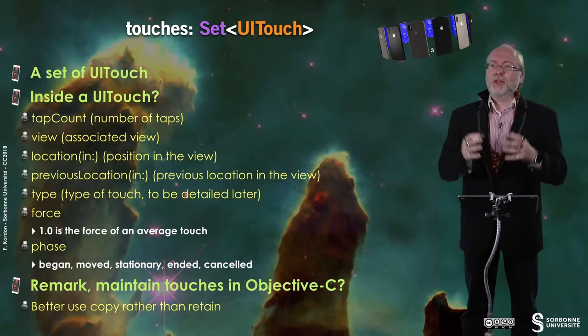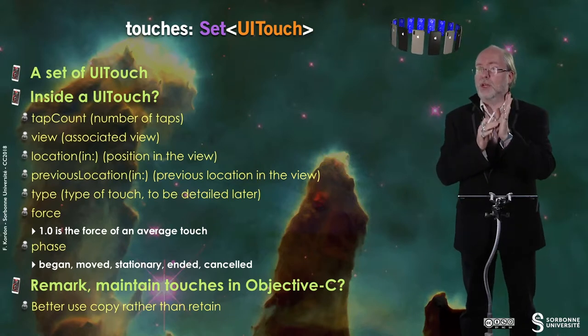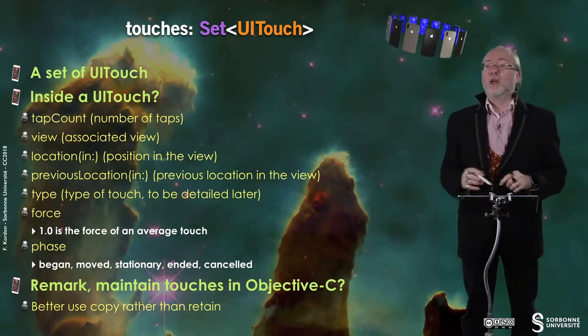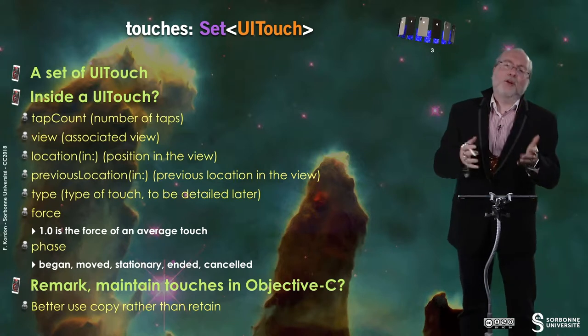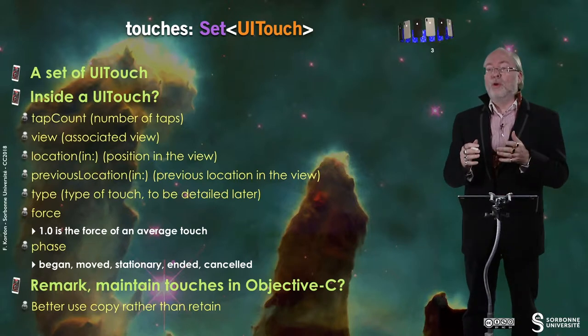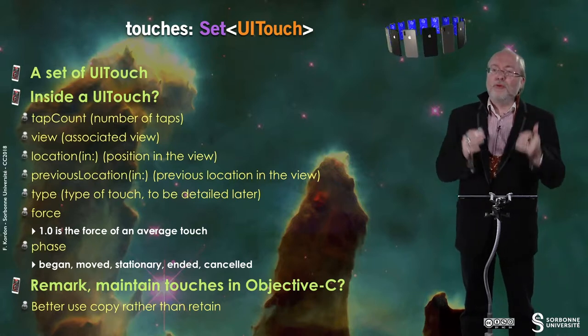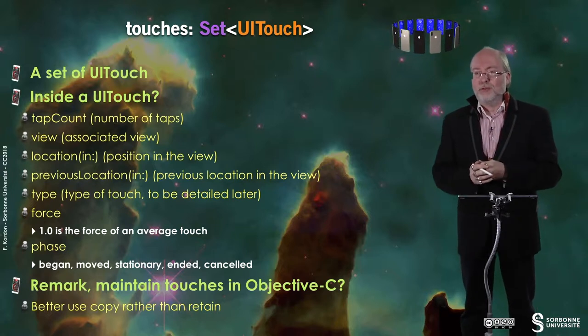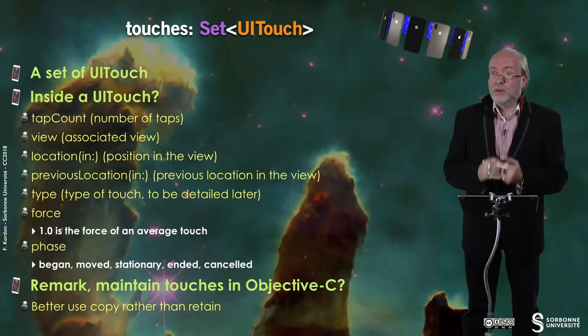Let's first focus on the first parameter, which is a set of UITouches. A UITouch describes a contact on the screen — let's imagine a finger contact. First of all, you have an attribute that describes the number of taps. Then you can get a link to the corresponding view, and you have a method that allows you to get the position of this contact in this view. You can also get the previous location in the view. In both methods, you pass the view you want the location as a parameter.